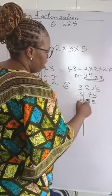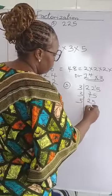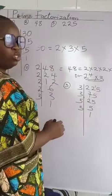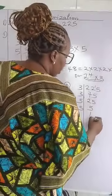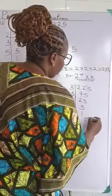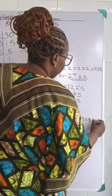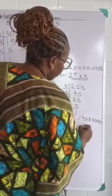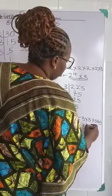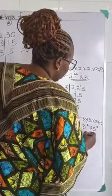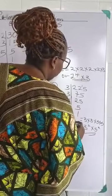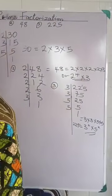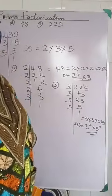Then we use 5. 5 going into 25 is 5. And 5 into 5 is 1. So the prime factorization is 3 times 3 times 5 times 5. Or you write it as 3 raised to power 2 times 5 raised to power 2 — that is our answer. We have 225 equals 3 raised to power 2 times 5 raised to power 2.